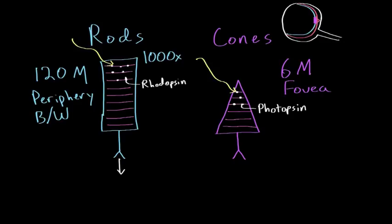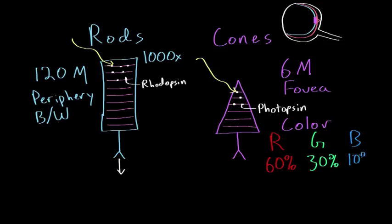On the other hand, cones are not as sensitive, but they do result in the detection of color. So they result in color vision. And in fact, there are three different types of cones. There are red cones, which make up about 60% of all cones in the eye. There are green cones, which make up about 30% of all cones in the eye. And there are blue cones, which make up about 10% of all cones in the eye.